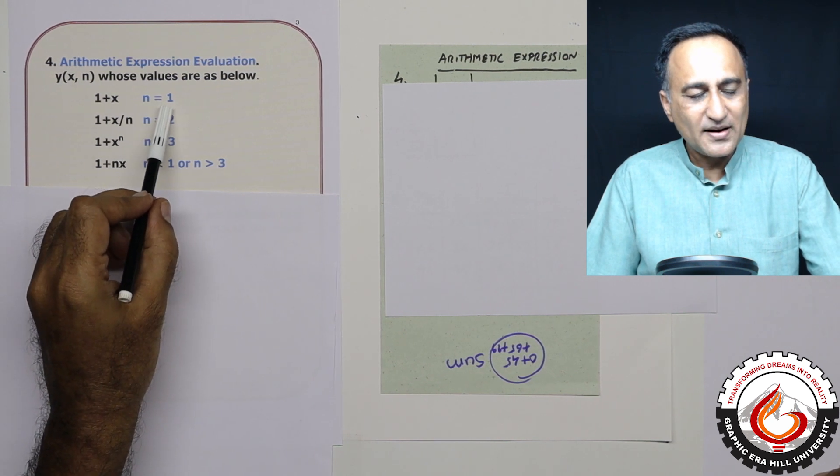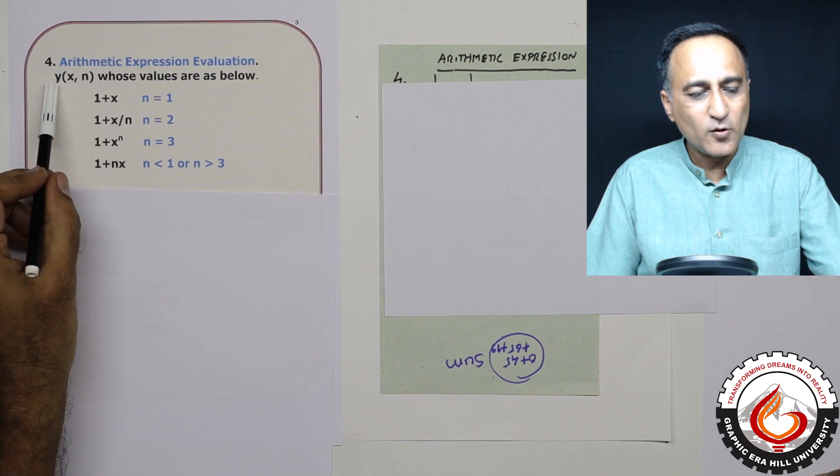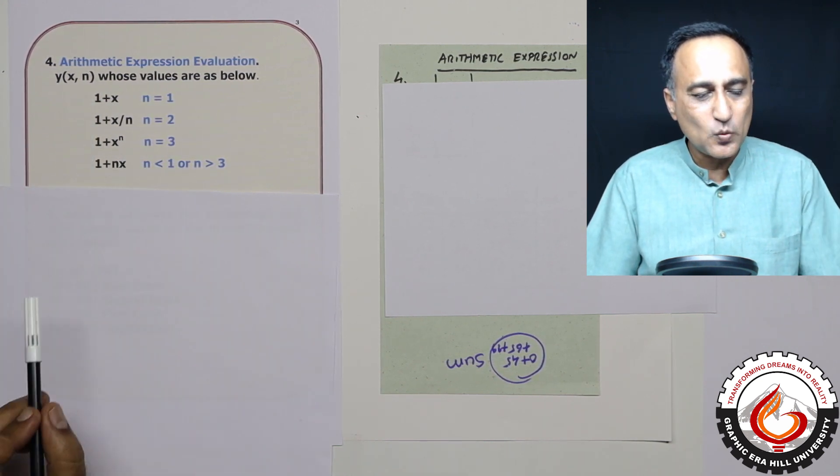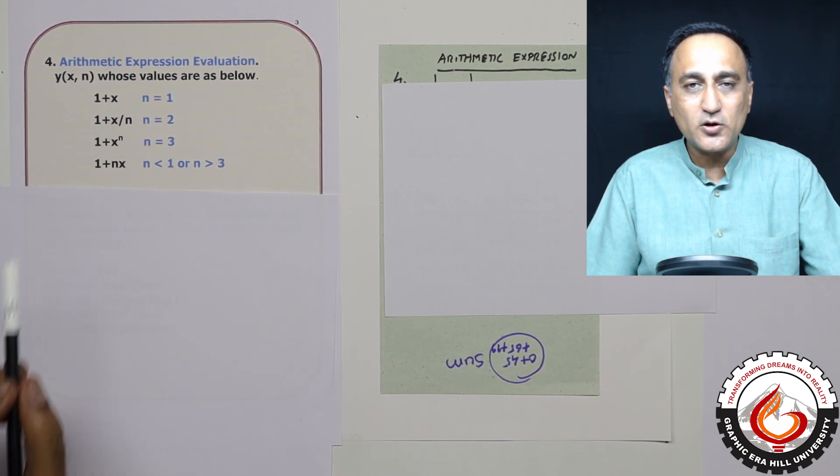Suppose n is equal to one, then x can get any value and then you will calculate y. So suppose x is one and n is also one, then y is equal to one plus one. So y is equal to two.